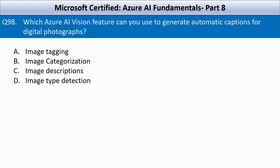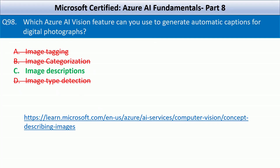Which Azure AI vision feature can you use to generate automatic captions for digital photographs? Your options are image tagging, image categorization, image descriptions, image type detection. Image tagging assigns labels like dog, beach, or sky to an image — not full sentence captions. Image categorization classifies images into categories such as outdoor or sport, making it an incorrect choice. The image description feature, also known as image captioning, is specifically designed to generate automatic human-readable captions for digital photographs, providing textual descriptions summarizing the main content of the image. Image type detection identifies image type — such as clip art or a photo — and is not descriptive.